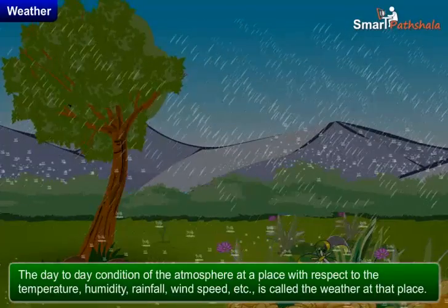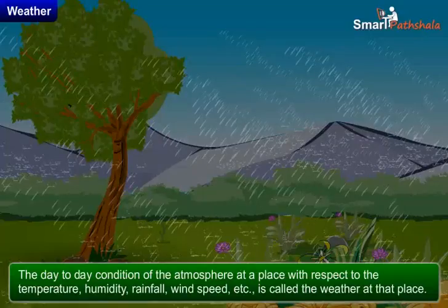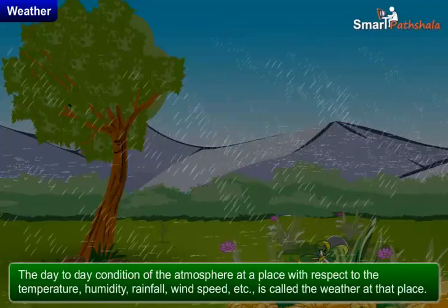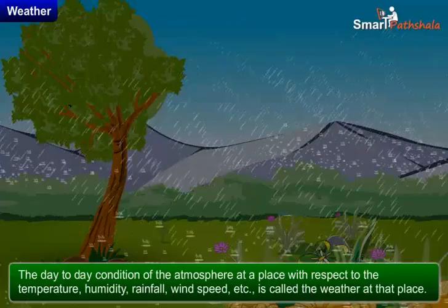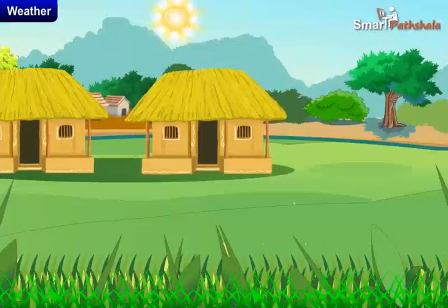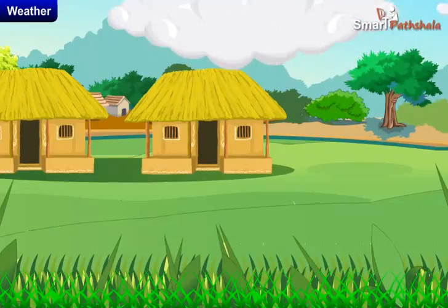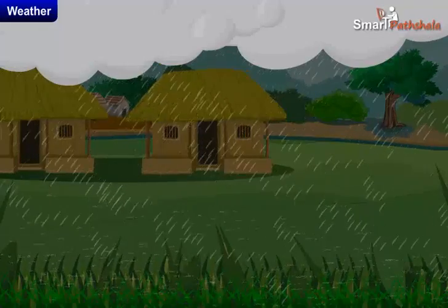The temperature, humidity, and other factors are called the elements of weather. The weather of a place varies from day to day, hence weather is a complex phenomenon and it varies over very short periods of time. At times we may find the day to be sunny in the morning, then suddenly clouds appear and it may start raining.